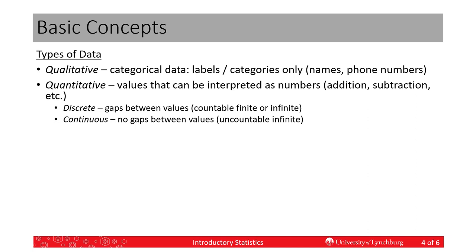Discrete data is quantitative data that has gaps between the values. For example, take a hen — a female chicken. That hen can lay between zero and seven eggs in one week under normal circumstances. She can't lay half of an egg or a third of an egg; she either lays an egg or she doesn't. So there's a gap between zero and one egg, one and two, etc. We can count these values. And it doesn't make them finite — there can be an infinite number of values, such as eggs laid by a hen and all her future progeny over an infinite amount of time.